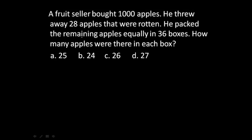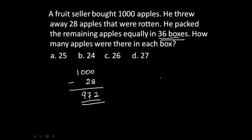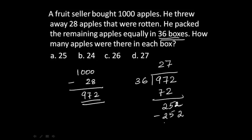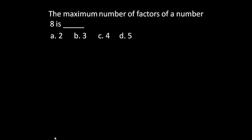Next question: A fruit seller bought 1,000 apples. He threw away 28 rotten apples, leaving 972 apples. He packed the remaining apples equally in 36 boxes. How many apples in each box? 972 ÷ 36 = 27. The correct answer is option D: 27.